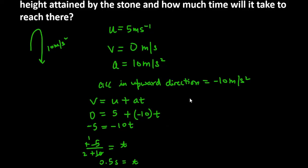So now what do we have to do? We have to find distance traveled, s. So what can we use to find the value? v² - u² = 2as.